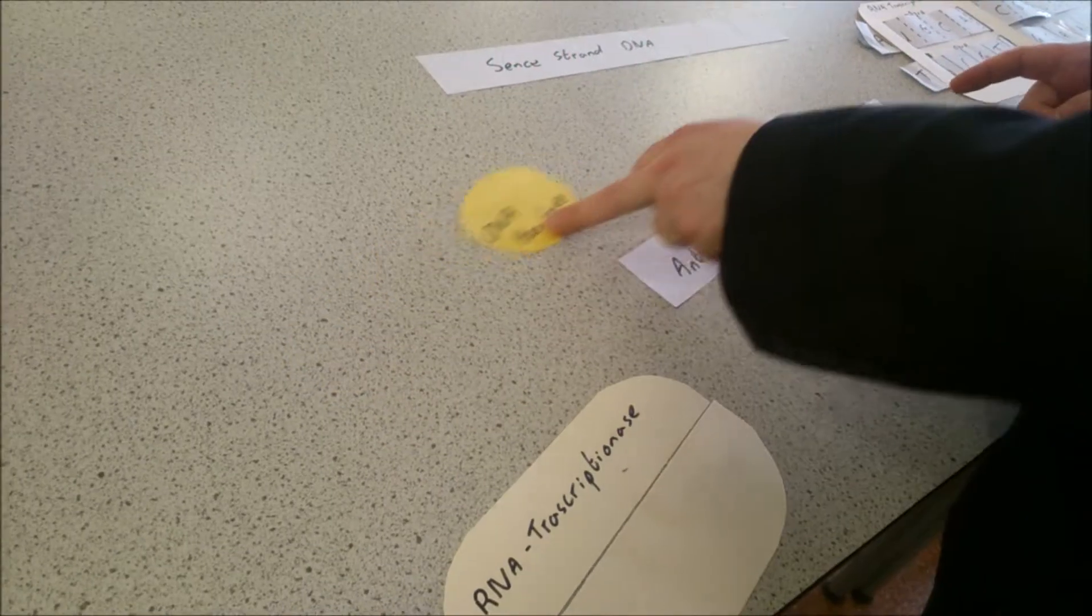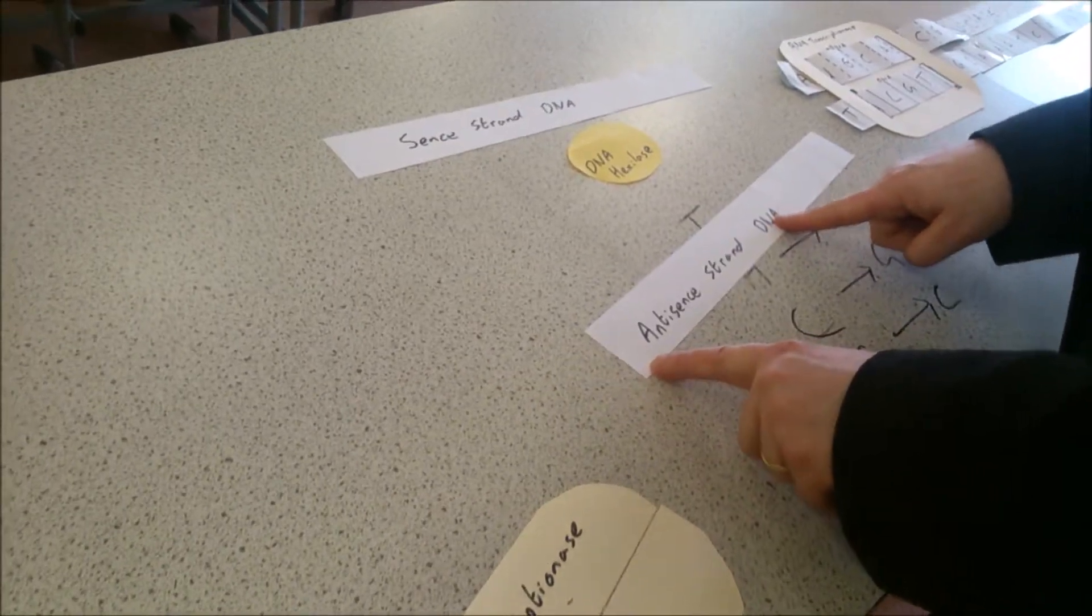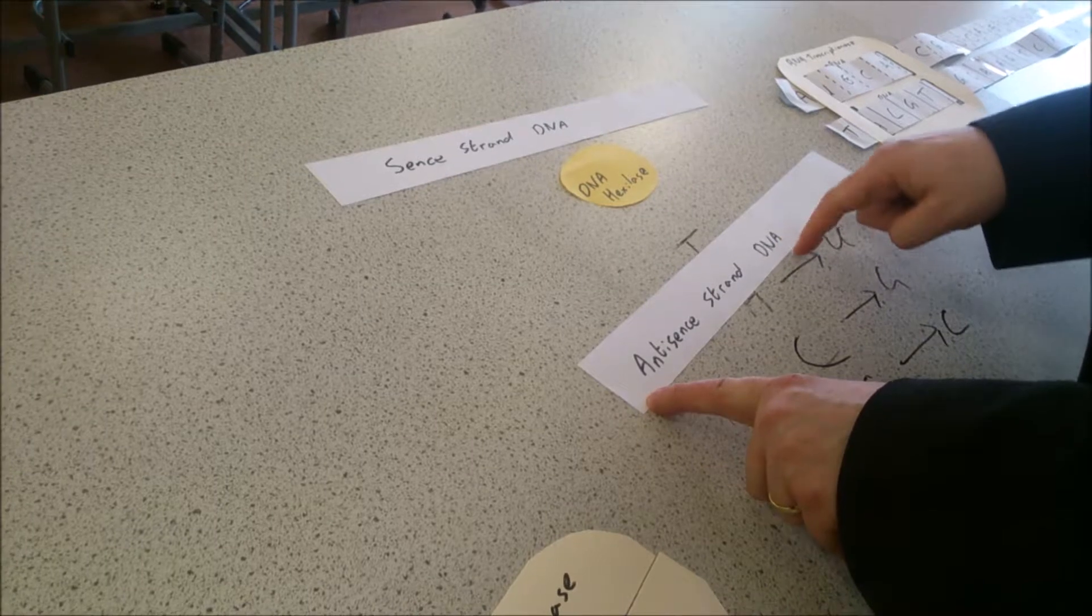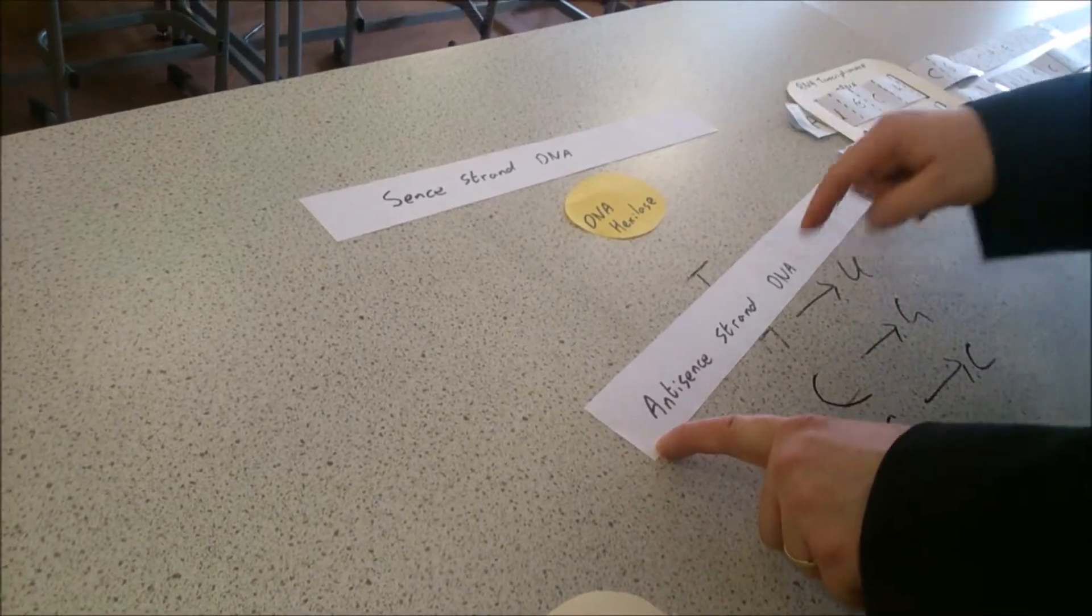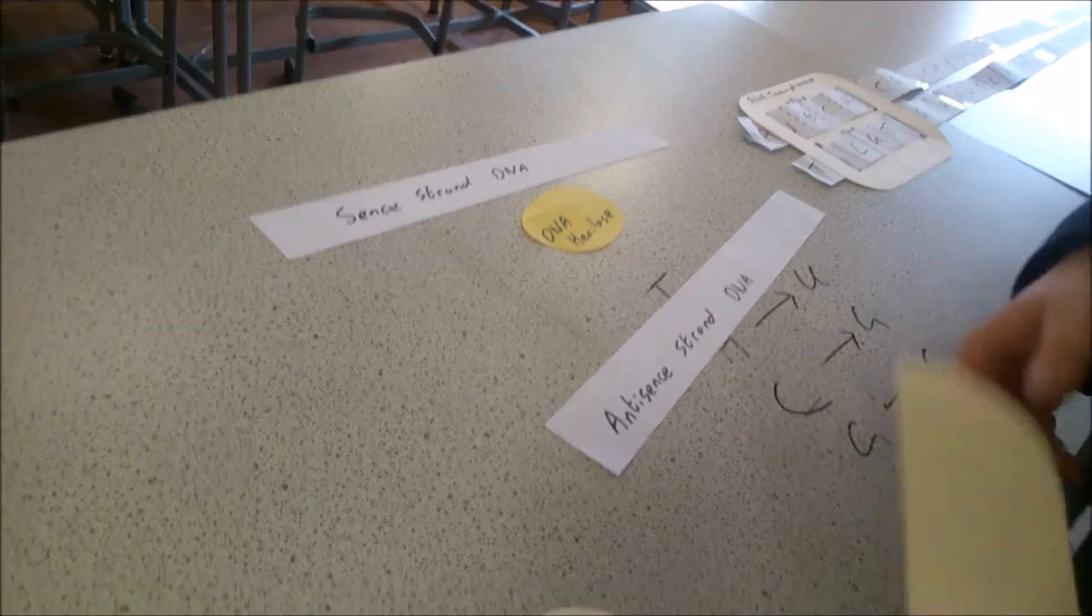Here's when DNA is exposed, that exposes the antisense strand of DNA which is where the code needs to come from to make messenger RNA.